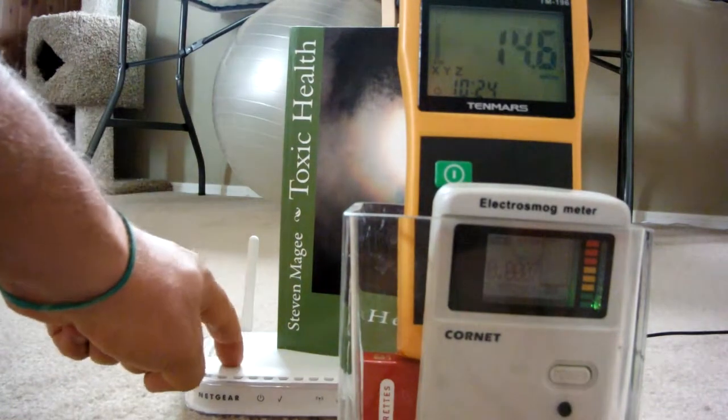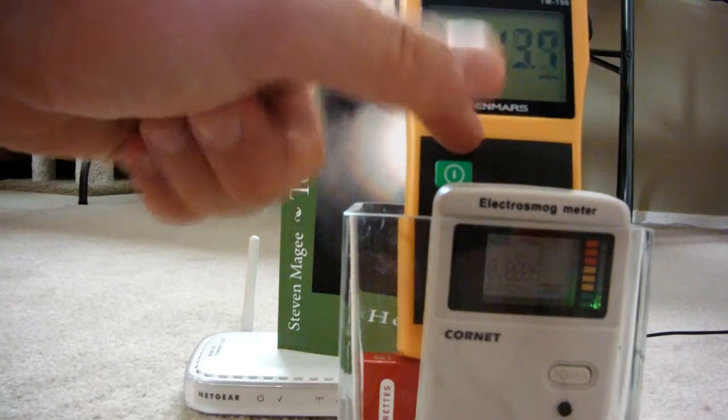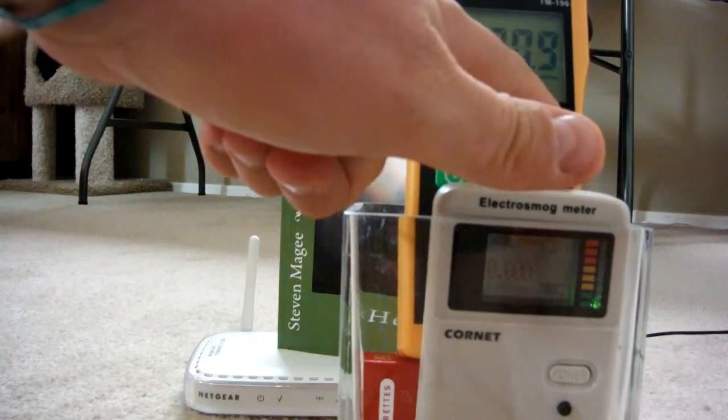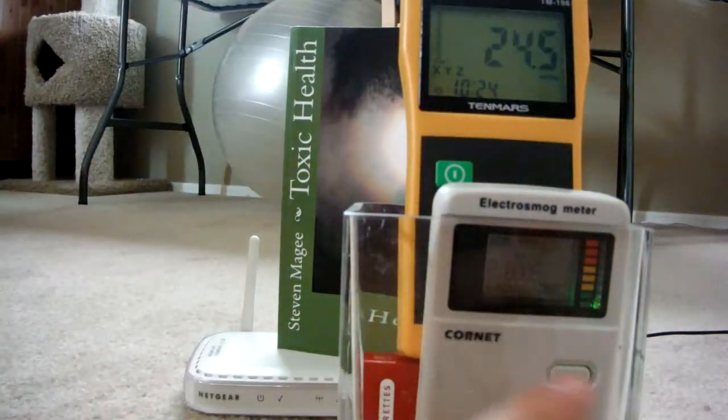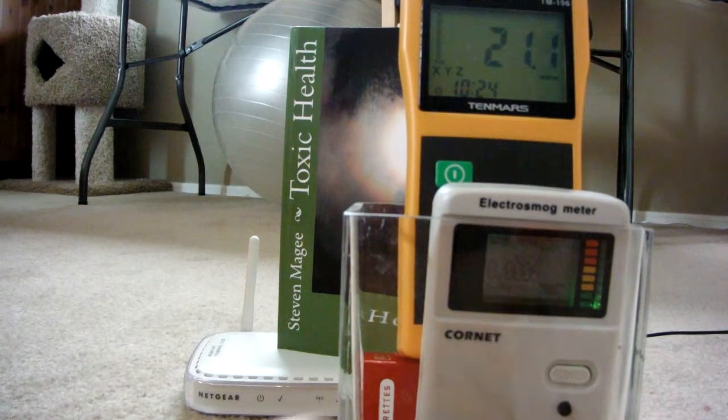We have our wireless router right here, it's currently switched off. We're going to use these two meters to take our wireless radiation meter readings. This one is recording in millivolts per meter and this one is recording in milliwatts per meter squared.